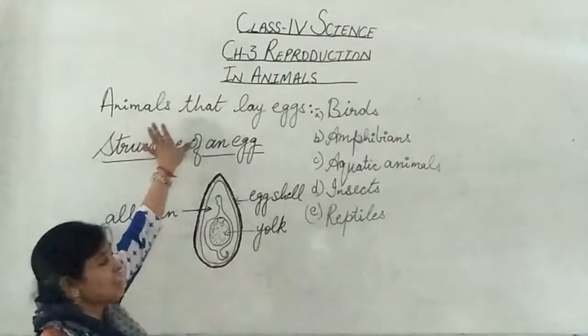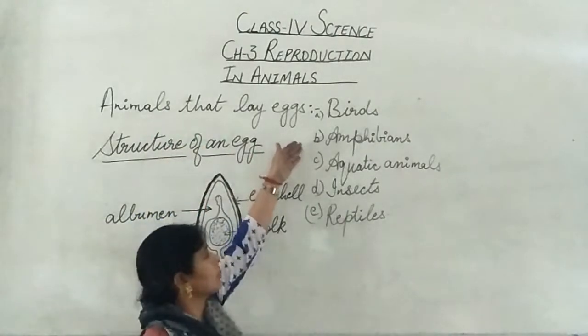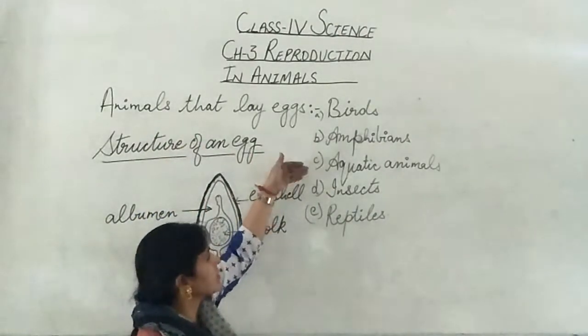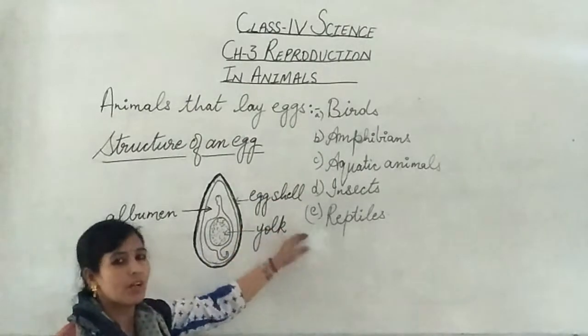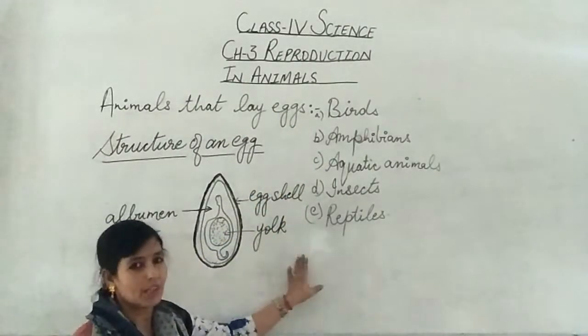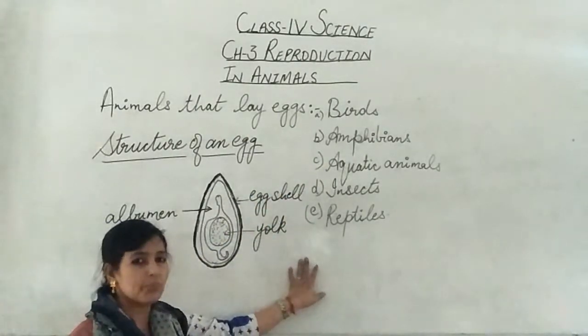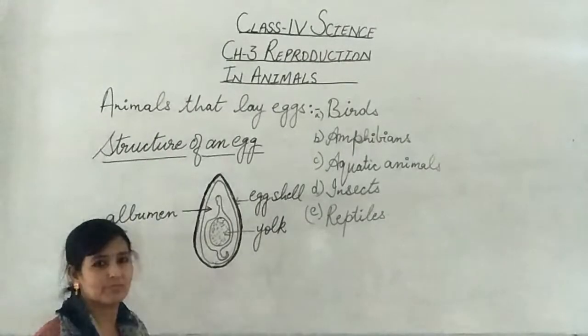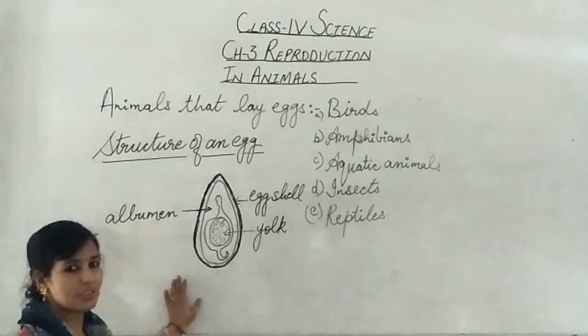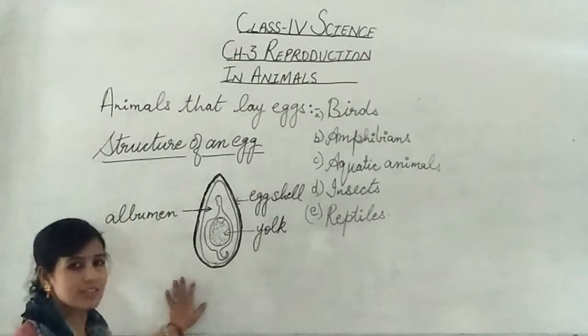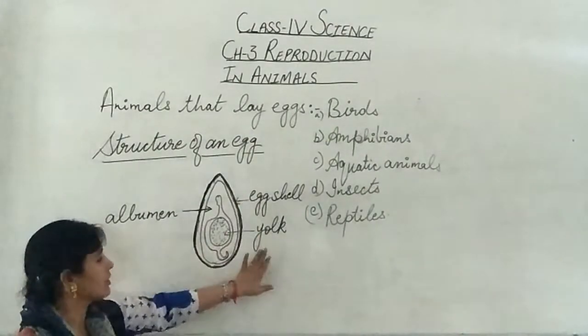The animals that lay eggs, there are different categories like birds, amphibians, aquatic animals, insects, reptiles. These all are the animals that lay eggs. So before talking about these animals, let's talk about the structure of an egg. Egg consists of many parts: one is the egg shell,